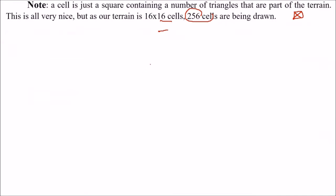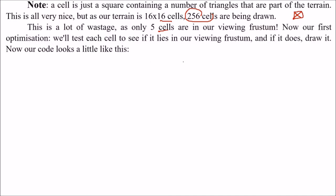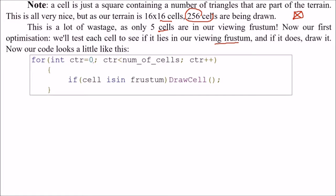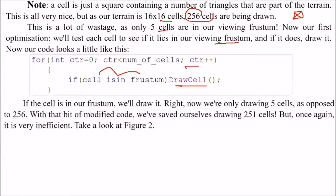Only five cells are in our viewing frustum. Our first optimization will test each cell to see if it actually lies in our viewing frustum or not. And if it does, we draw it. So with modified code we'll say: if cell is in the frustum, then draw the cell, otherwise we won't.